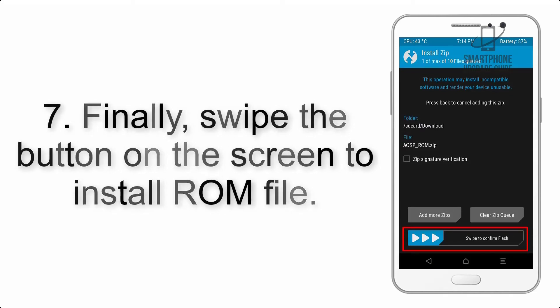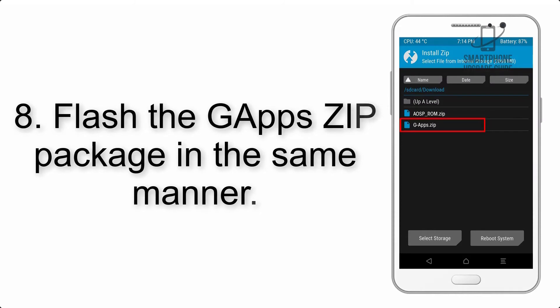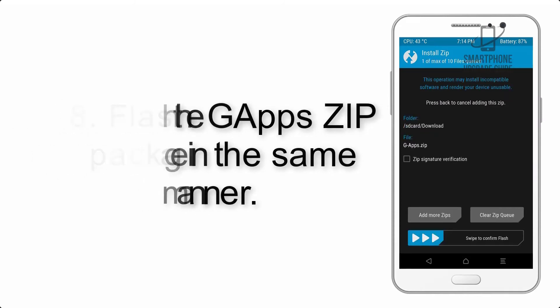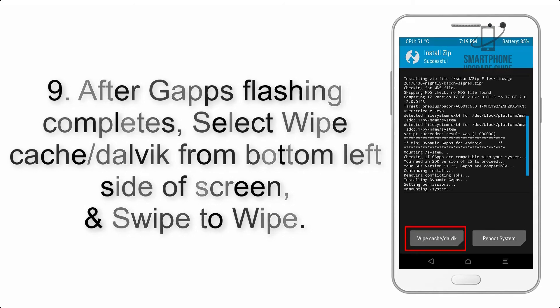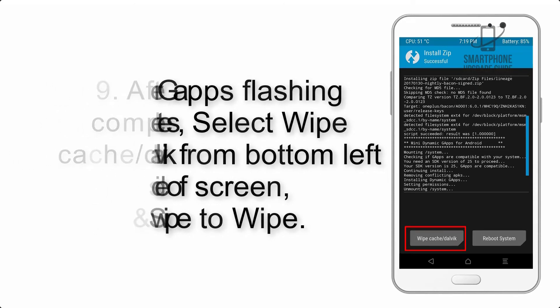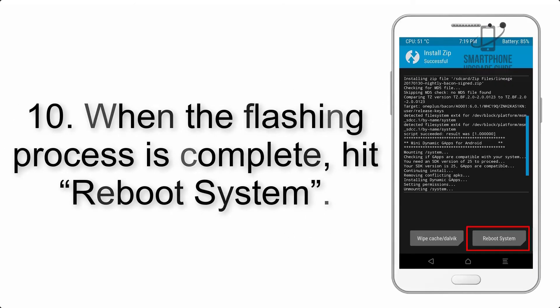Step 7: Finally, swipe the button on the screen to install the ROM file. Step 8: Flash the GApps zip package in the same manner. Step 9: After GApps flashing completes, select Wipe Cache and Dalvik from the bottom left side of the screen and swipe to wipe.